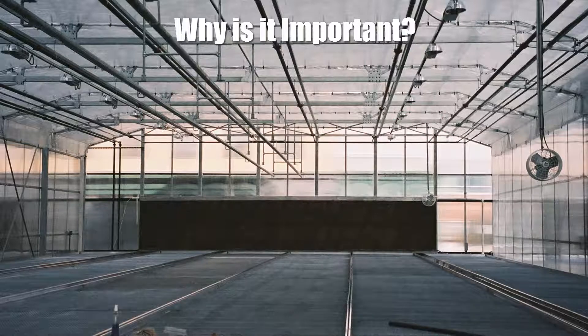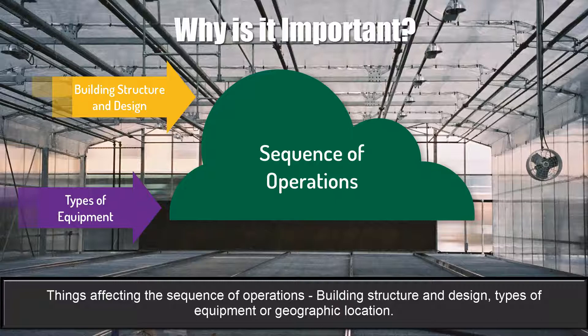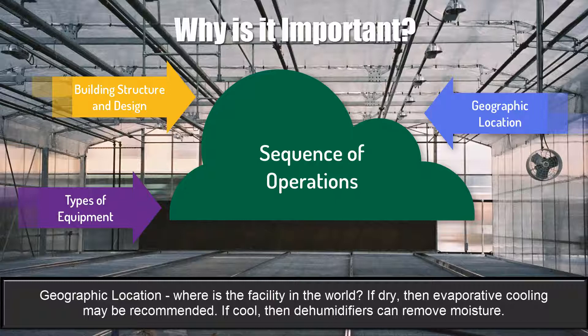Some things that can affect the sequence of operations: building structure and design — how is heat and air distributed throughout, and how and where is the equipment placed? Types of equipment — is it right for the job and will it be enough to achieve an optimal state? Geographic location is also a big factor, especially with heating and cooling. If very dry, evaporative cooling may be recommended using pads and fans. If moist, the moisture can be removed from the air with dehumidifiers.